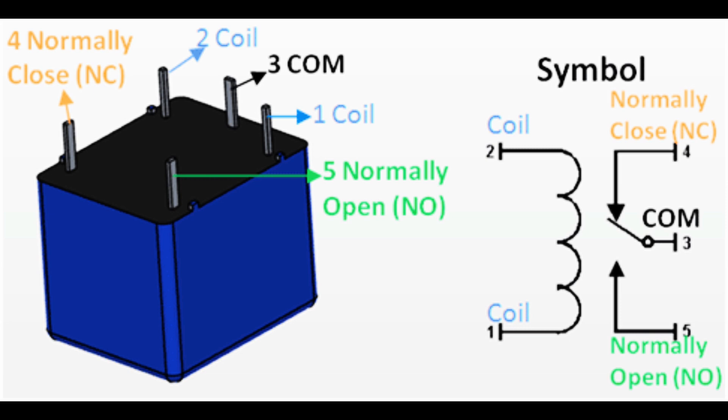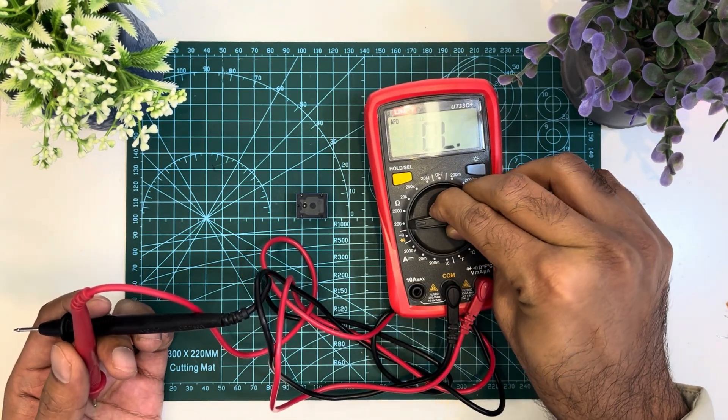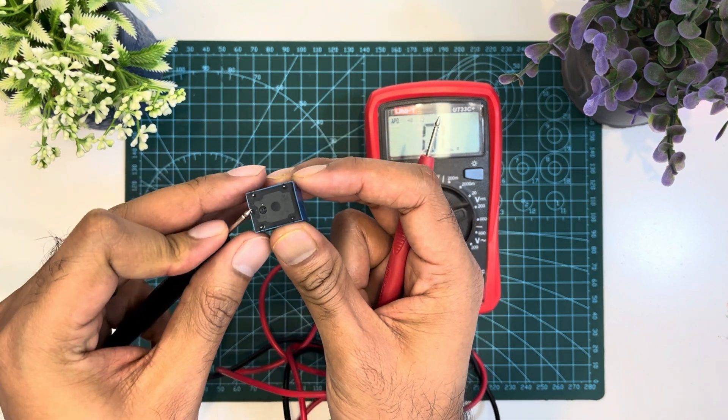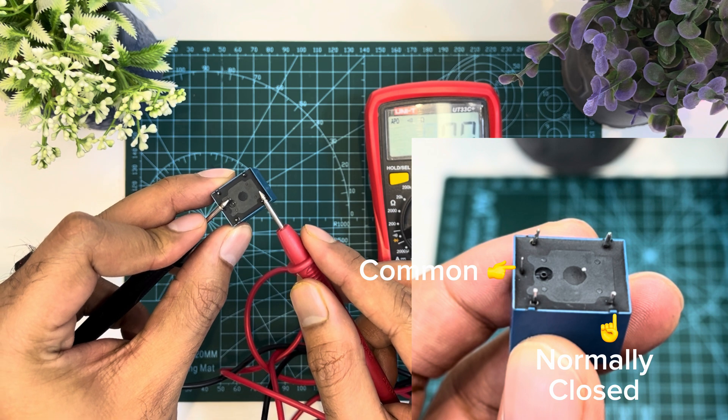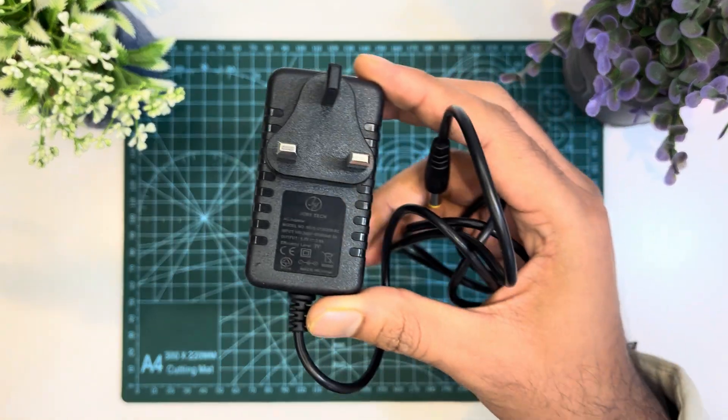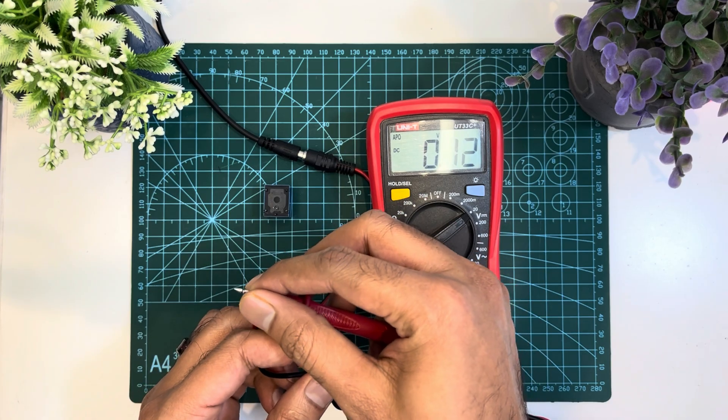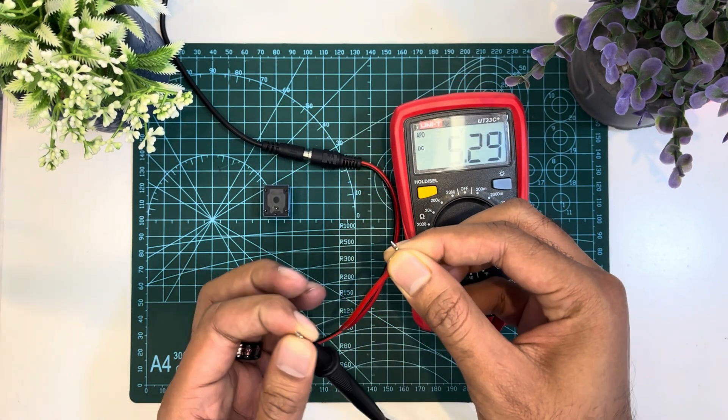We can check the continuity between common and normally open or normally closed with a multimeter. We have to set the multimeter to continuity test mode. Then if we touch one probe at the common pin and another at normally closed, we can hear the beep sound when there is no trigger. I have this 5V 2A DC power supply. I will give 5V DC to the two coil pins and trigger the relay.